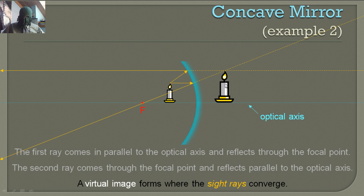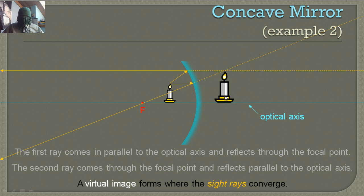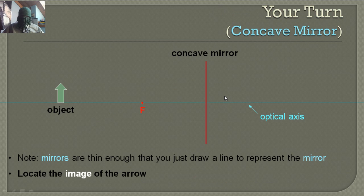This is how funhouse mirrors work — they make you look taller, skinnier, shorter, or fatter. This is a virtual image because it's on the other side of the mirror from the object. Objects on one side, image on the other — you get a virtual image.